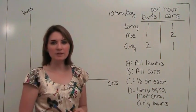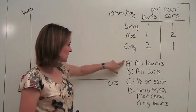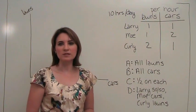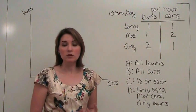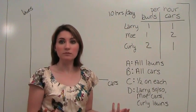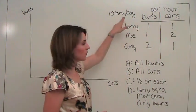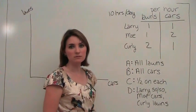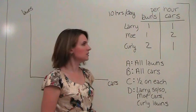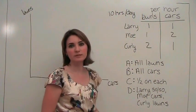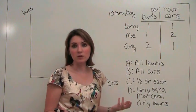Let's think about the different points on our graph. Point A is going to be the point where all of our market participants are only mowing lawns. So if they're working ten hours a day, Larry can mow ten lawns, Moe can also mow ten lawns, and Curly can mow twenty lawns. So we get a total of forty lawns.